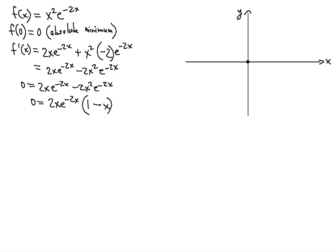Keep in mind that e^(−2x) is not going to be used because we simply divide 1 by e^(2x) — so we can disregard it. That leaves us with two choices: 0 = 2x, or 0 = 1 − x. The first gives us x = 0, and the second gives us x = 1.